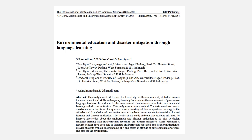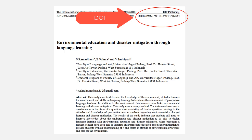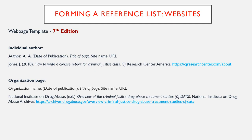A DOI, or digital object identifier, is a combination of numbers and letters unique to a source that provides a stable link to the location of the source. In APA 7th edition, you must include a DOI for any source that is assigned one. You can find the DOI with the rest of the publication information. If there is no DOI, use the URL. If neither exists, omit this part of the citation.